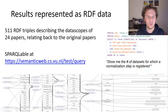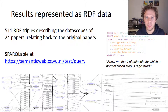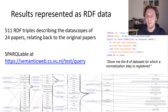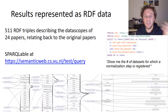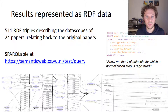We have 511 RDF triples describing these papers and their individual data scopes. Here at the bottom you can see a snippet of the dataset. You can actually SPARQL against this in a public SPARQL endpoint, and those SPARQL queries link to interesting competency questions — such as, show me the number of datasets for which a normalization step is registered. You can test it out yourself.